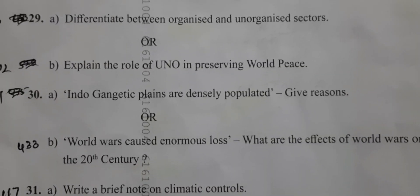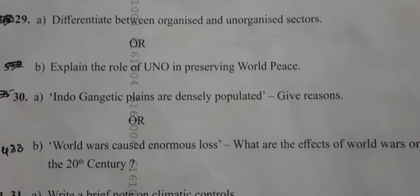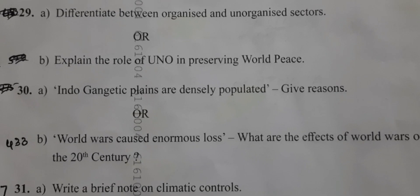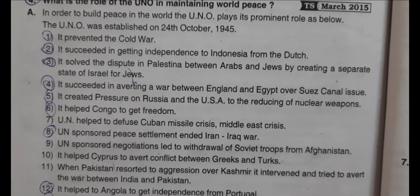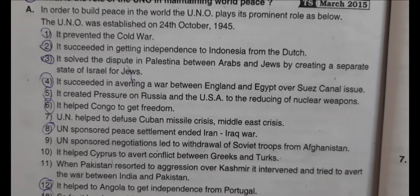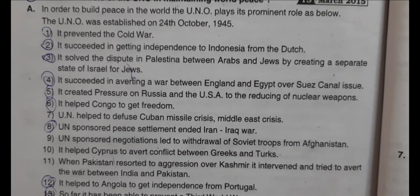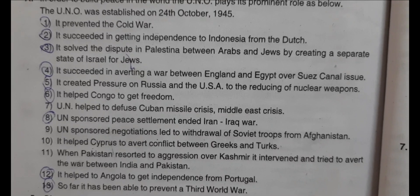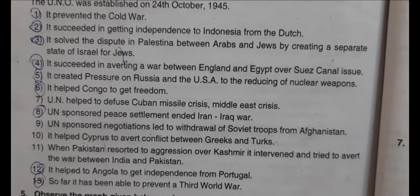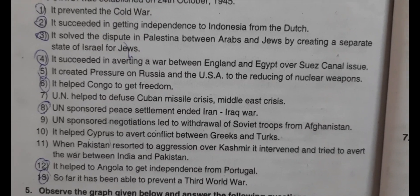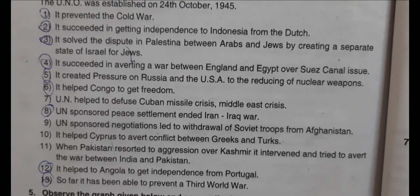The second question and choice: Explain the role of the UNO in preserving world peace. The UNO was established on 24 October 1945. It prevented the Cold War, was successful in getting independence for Indonesia from the Dutch, and solved the dispute between Palestine, Arabs, and Jews by creating a separate state of Israel. There are 13 points; any 8 points will get full marks.